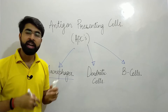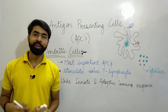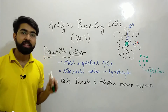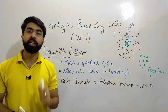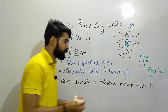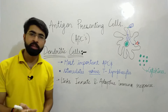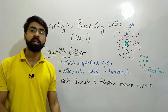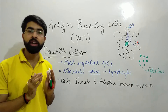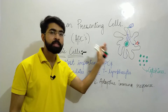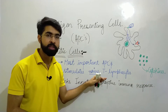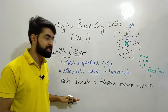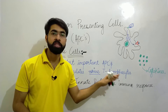Now let us discuss dendritic cells. Dendritic cells are the most important antigen presenting cells and they stimulate naive T lymphocytes. Naive T lymphocytes are those T lymphocytes which have been produced in the body but have never encountered an infection — they are simply new and haven't faced any infection yet. These dendritic cells help stimulate those naive T lymphocytes, and they also link the innate and adaptive immune systems.